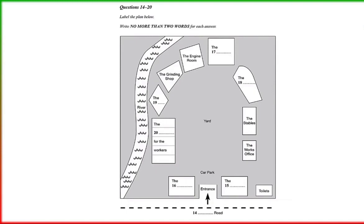I'm going to give you a plan of the site and point out where everything is. The river is on the left, and running along the bottom is Woodside Road. We're standing at the entrance at the bottom, and immediately to our right is the ticket office. You won't need that because you've got your group booking, but just past it are the toilets. In front of us is the car park, and to the left, by the entry gate, is the gift shop.